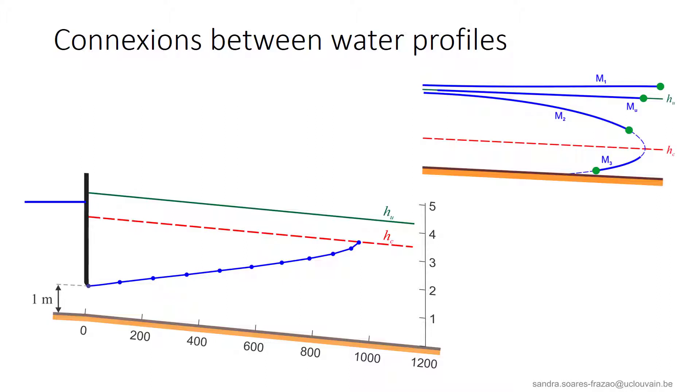We have in the previous lesson calculated this M3 profile. The channel is 1,200 meters long and we determined that the water profile reaches the critical depth after a distance of 932 meters. So how can the flow continue? In particular, if we consider that this channel is connected to a reservoir at its downstream end, with for example a water depth of 5 meters, so a depth above Hu, how can the flow continue?